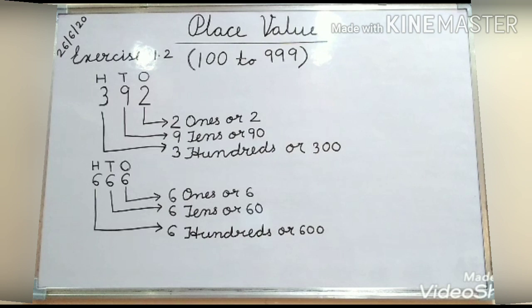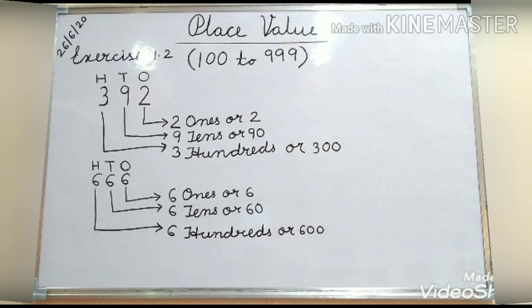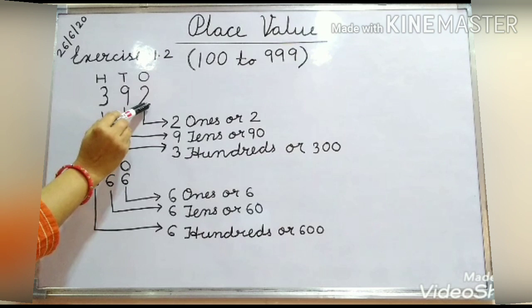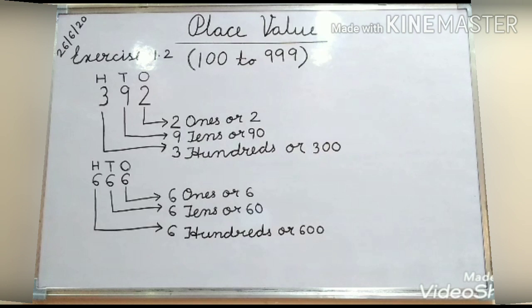First of all, you should know what is place value. The value of a digit in a number is according to its place or position. The digits in a number — like 2, 9, 3 — are digits. When we change the place of digits, then their value gets changed.